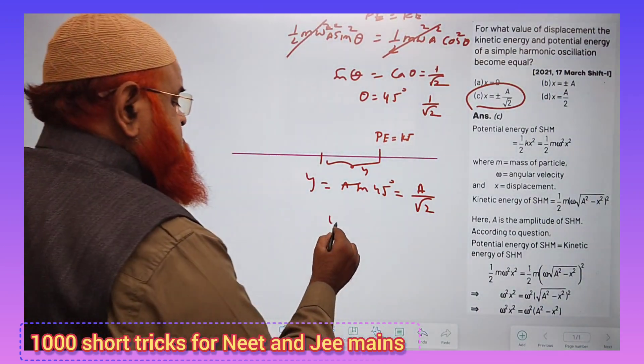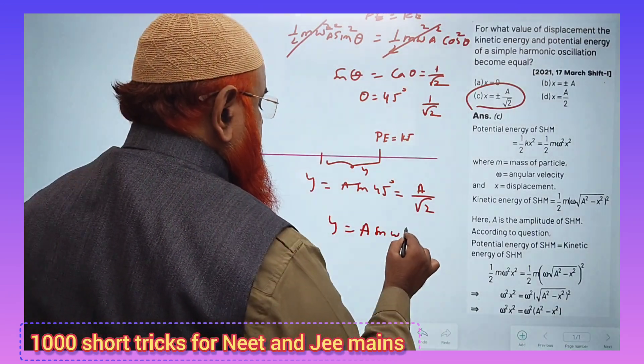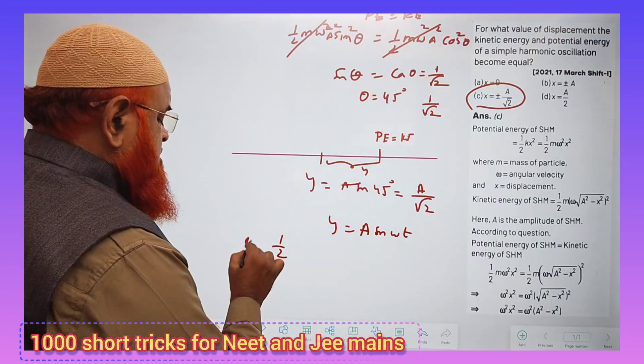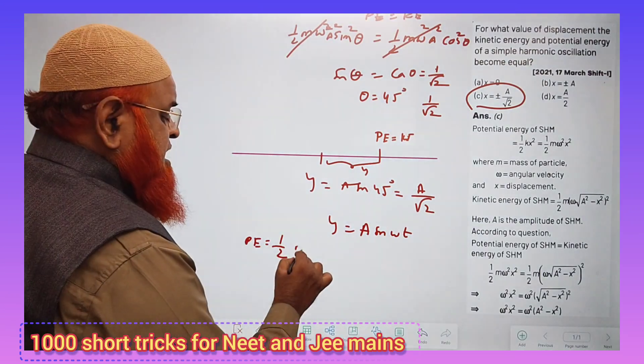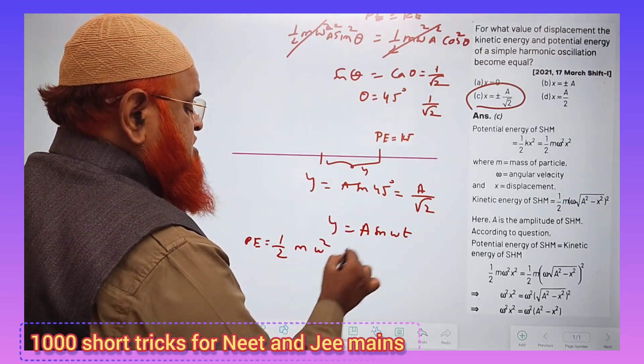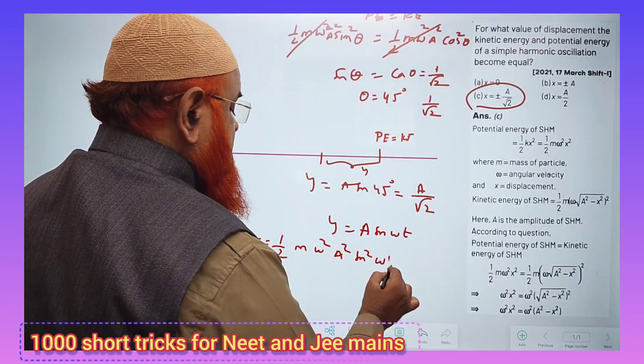You all know, y equals a sin omega t. So, if you want to find out the potential energy, you know the formula for potential energy is half m omega square y square. So, y square means a square sin square omega t.